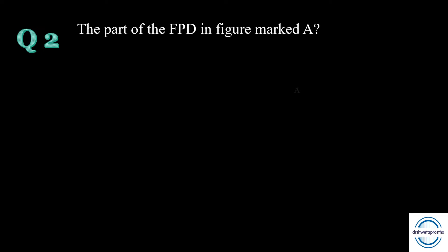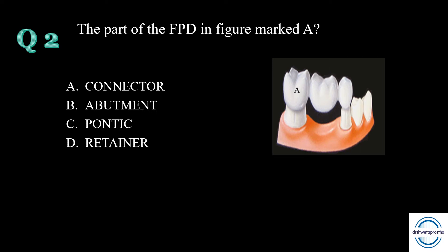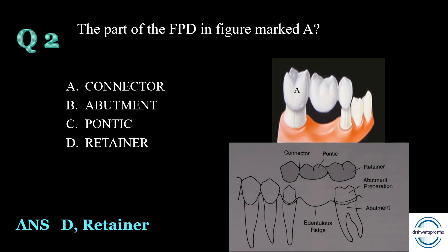Question number two: The part of the FPD marked A in the figure is — A) connector, B) abutment, C) pontic, or D) retainer? The answer is D — retainer. A retainer is the part of the bridge cemented to an abutment tooth. There are three parts of the FPD: the retainer, the pontic, and the connector. Pontic is the replacement tooth; the connector joins the retainer and pontic. Abutment is not part of the FPD — it is the tooth that supports the bridge.